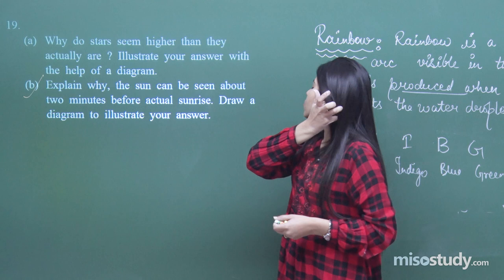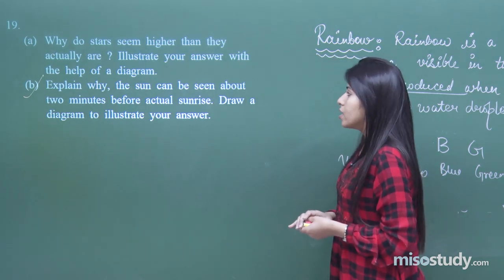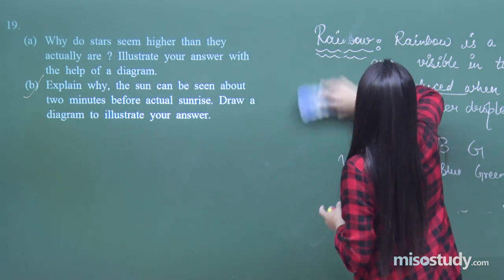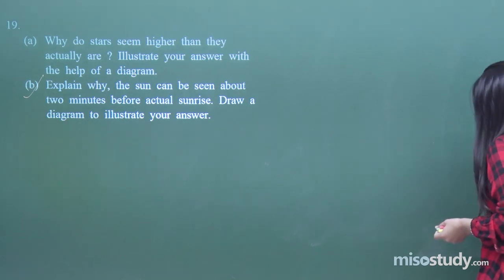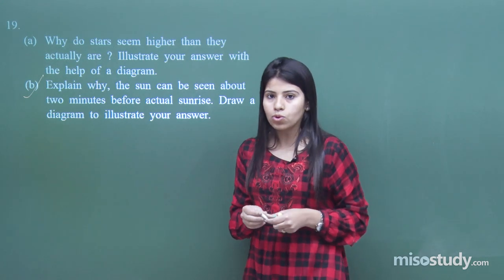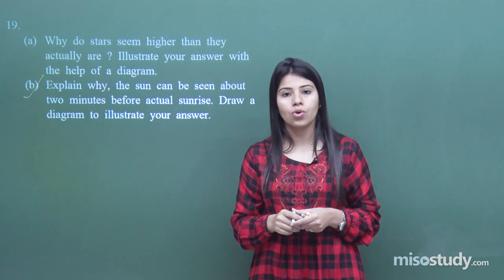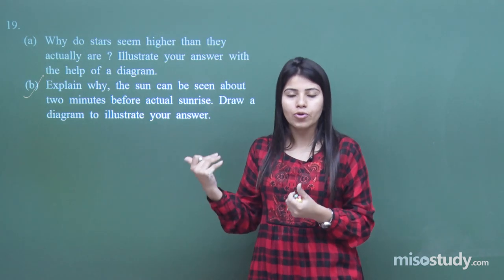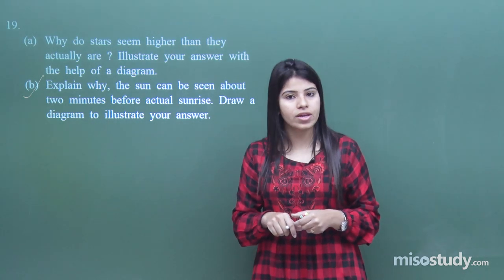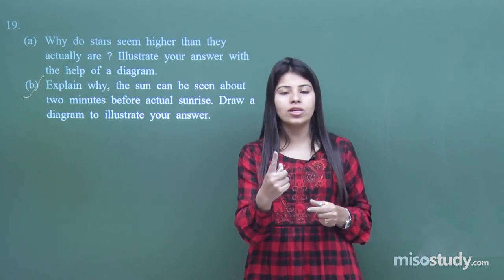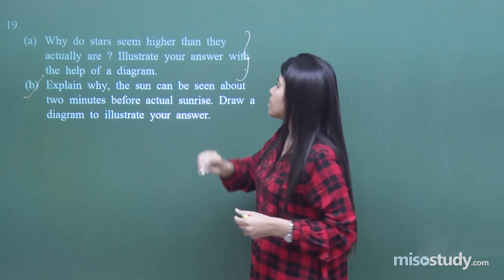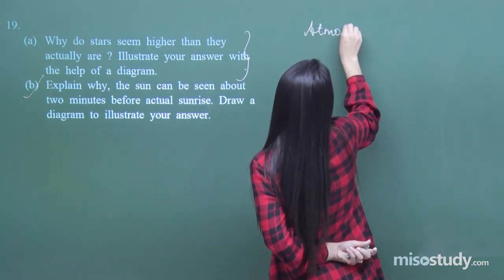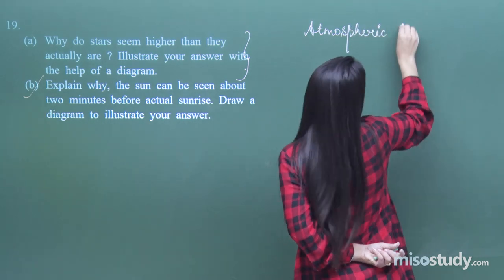Question 19: Why do stars seem higher than they actually are? Illustrate your answer with a diagram. This process happens due to atmospheric refraction. So if asked what the process is, you can write atmospheric refraction. The star is at its actual position but appears to be at a higher position — this is due to atmospheric refraction.